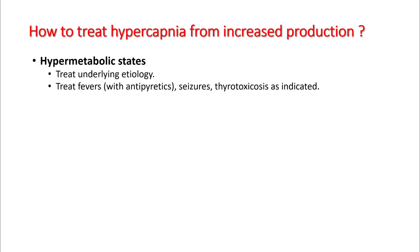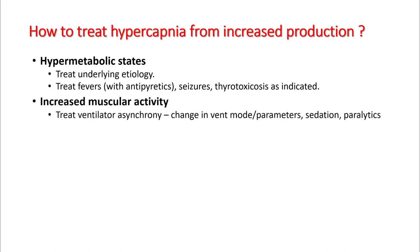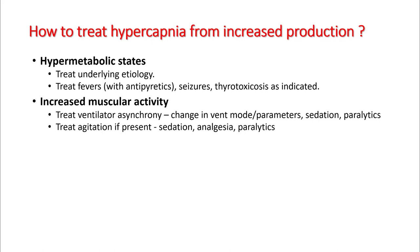If there is a hypermetabolic state, treat the underlying etiology. Treat fevers with antipyretics and treat seizures. For ventilator asynchrony, change vent modes and parameters, and increase sedation — sometimes paralytics are needed. If the patient is agitated, identify the cause and use sedation, analgesia, and occasionally paralytics, especially if the patient is severely hypercapnic or hypoxic.